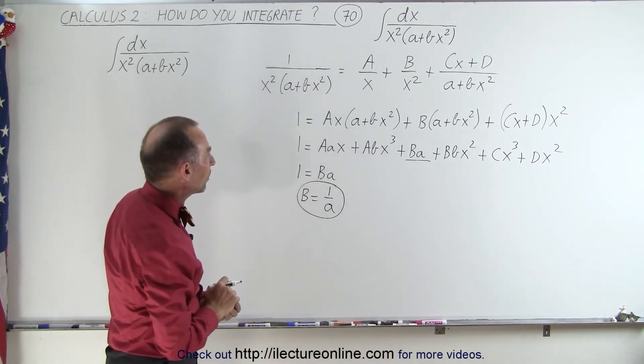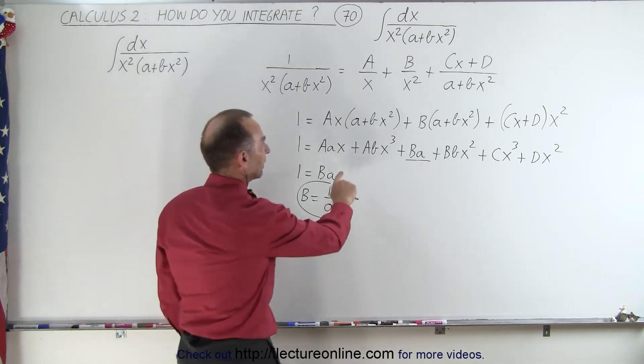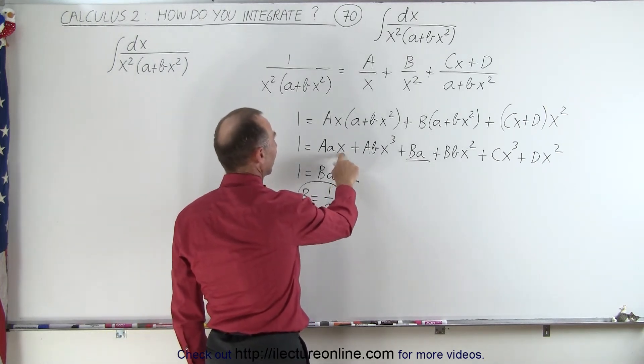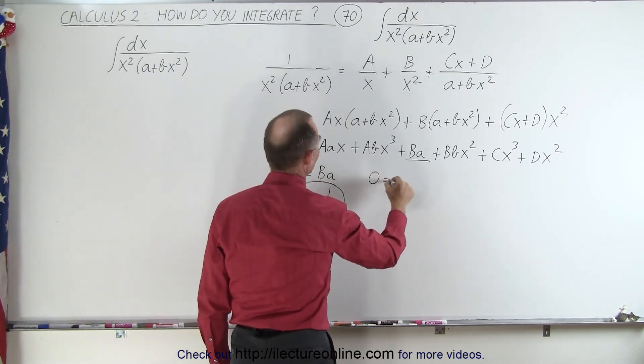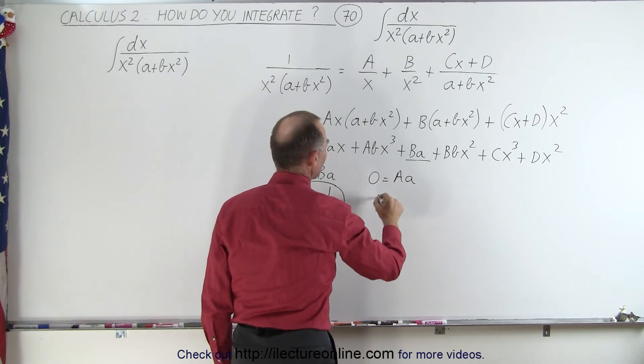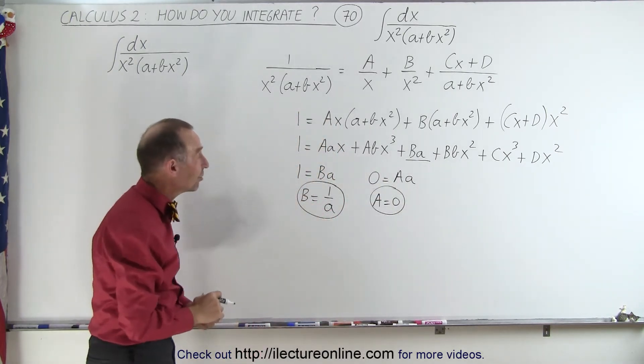Now let's see what else do we have. We have one term that has an x to the first power. We don't have any on the left side, which means that 0 is equal to A times a, which means a must equal 0. Alright, whenever one of them is 0, that makes it a little bit easier.